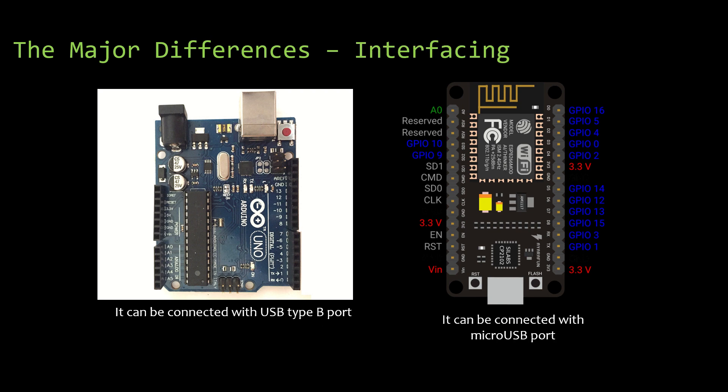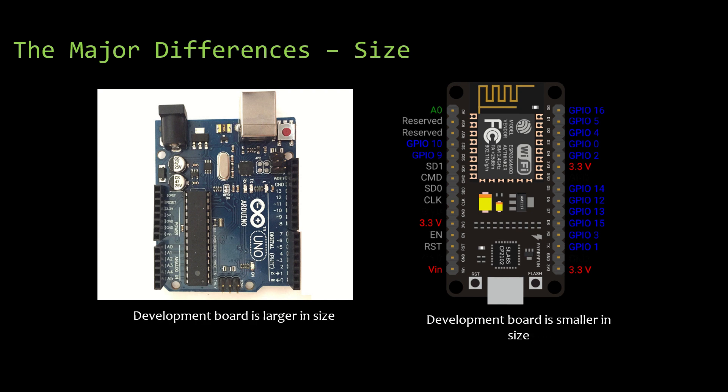Now coming to the interfacing aspect: Arduino UNO can be connected with a USB Type-B port, but NodeMCU can be connected with a micro USB port. The size is very small and you can connect it with micro USB.